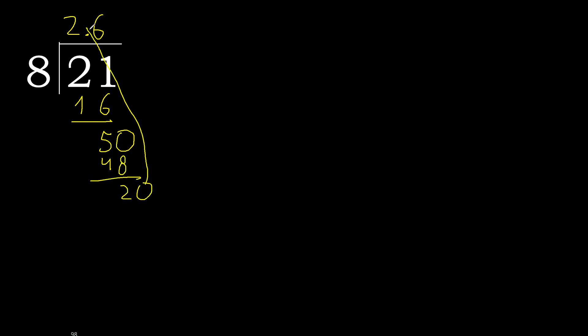Point is here. 20: 8 multiplied by 2 is 16 — subtract — complete.